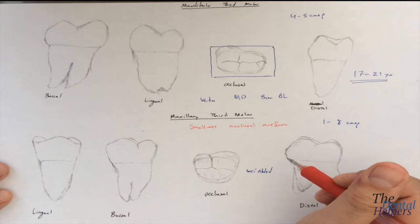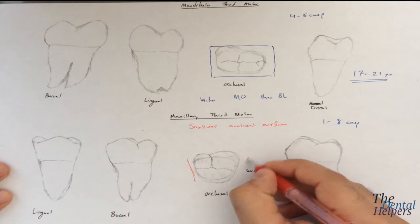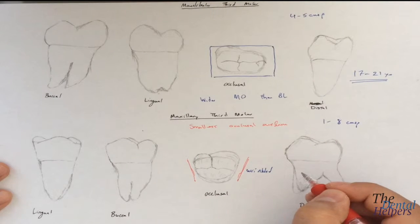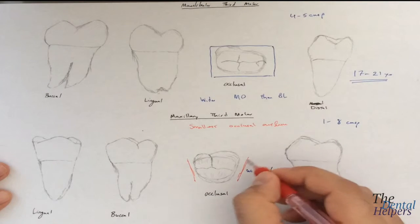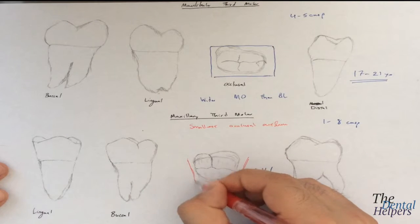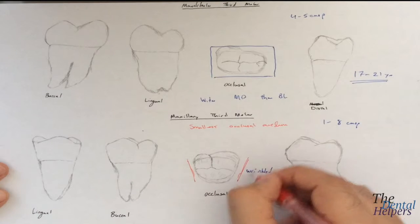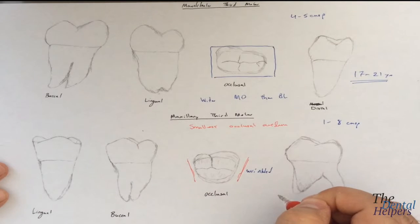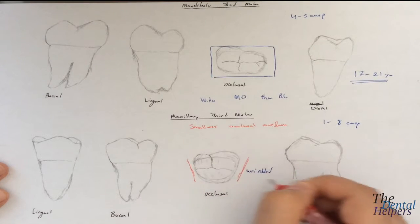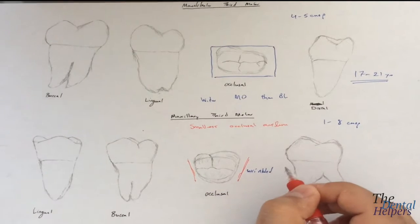The crown specifically tapers buccal-lingually — it's more narrow on the lingual side than the buccal, which is kind of obviously seen. And it also tapers from the mesial to the distal.